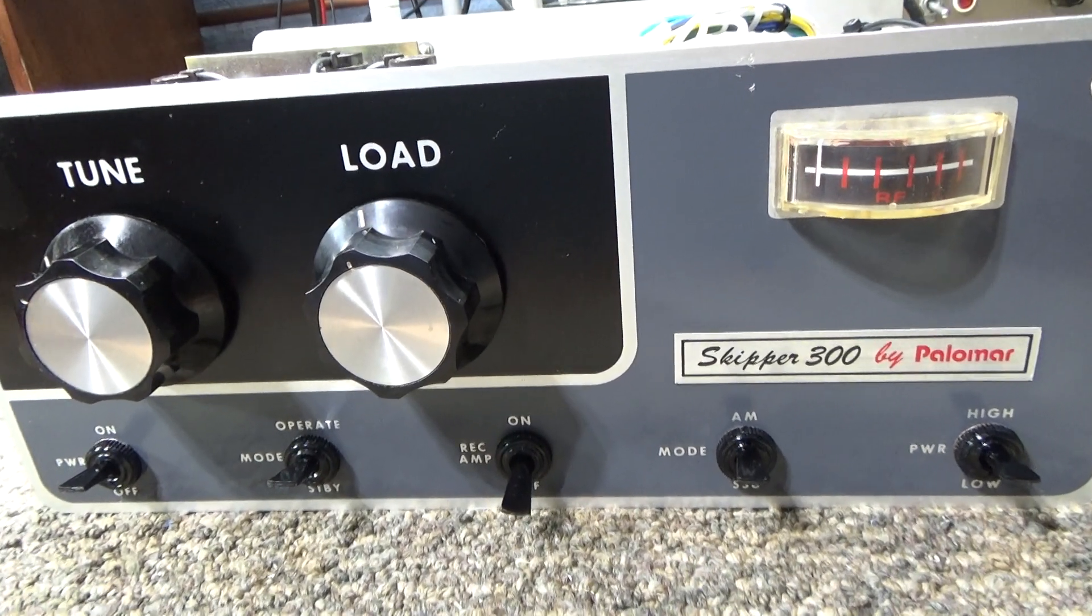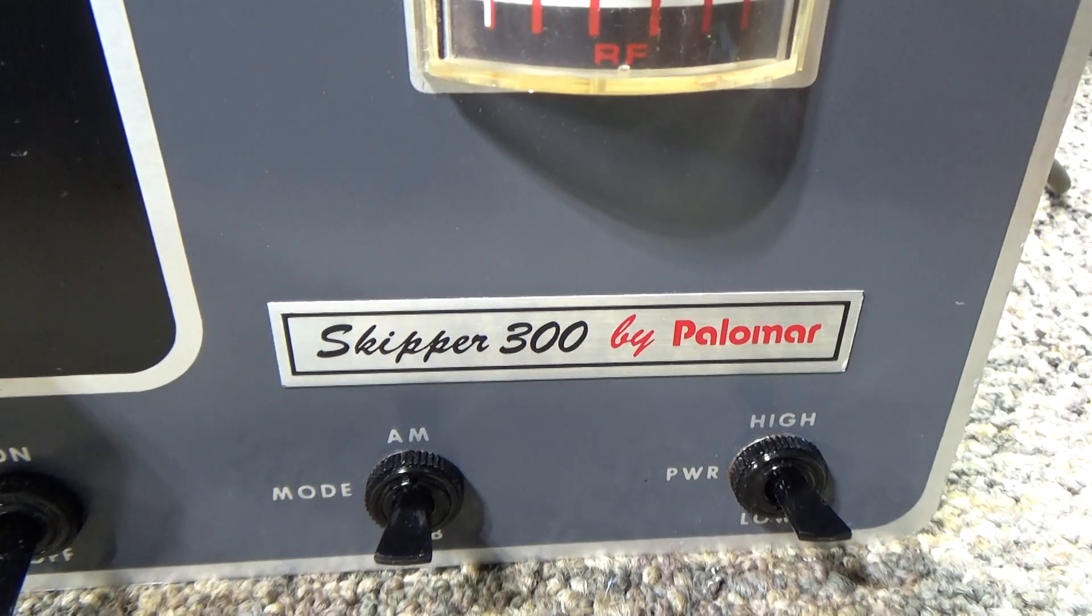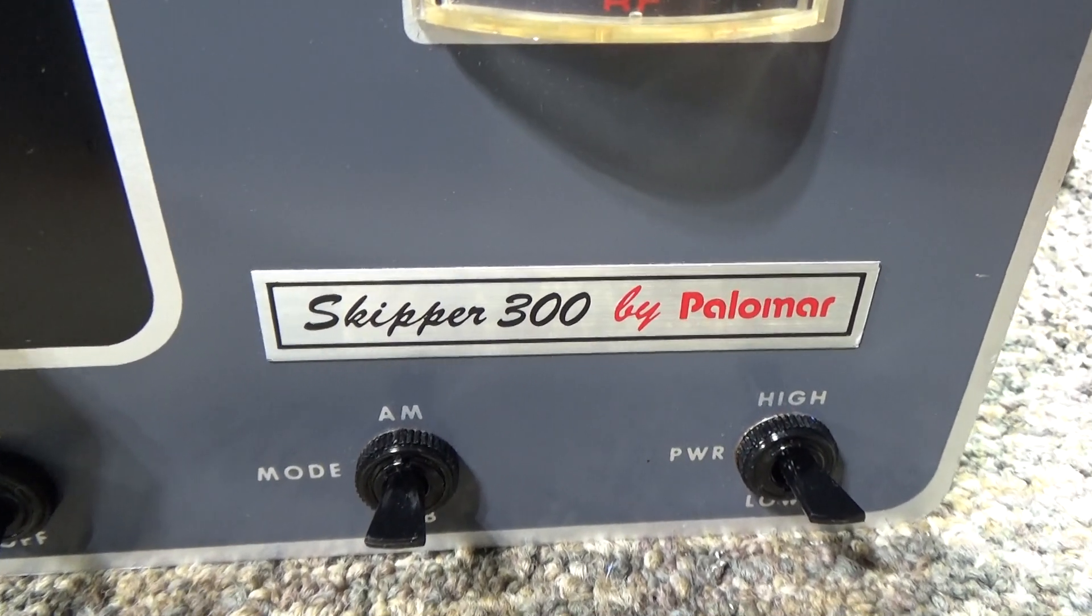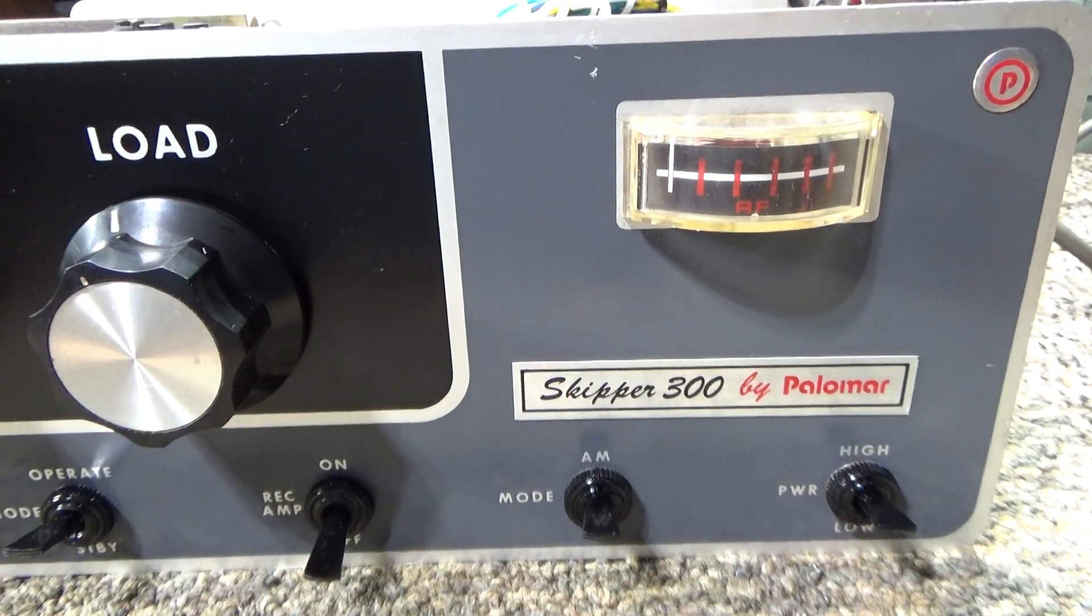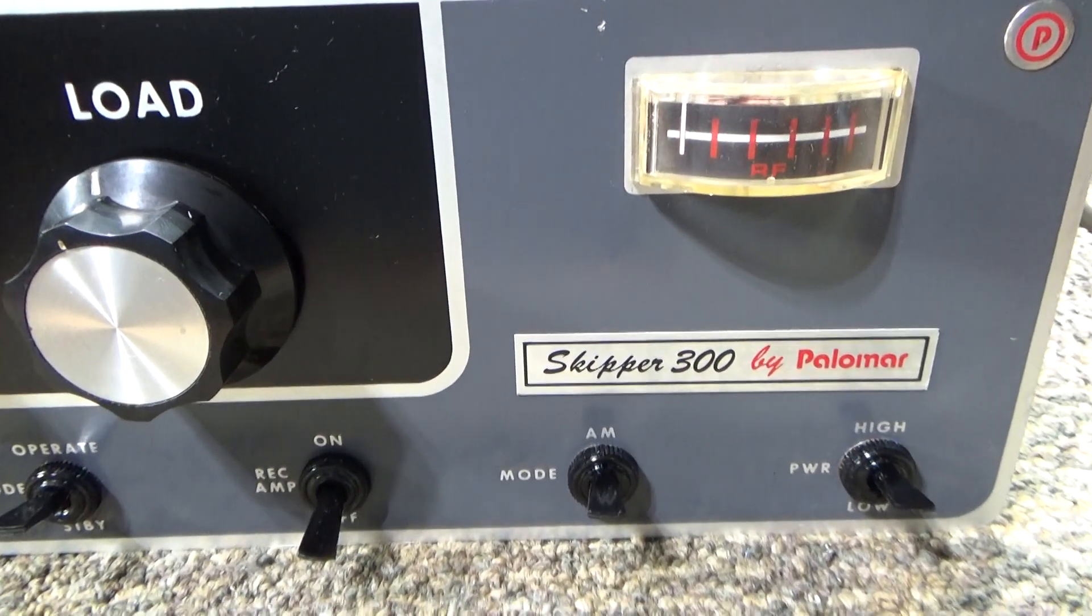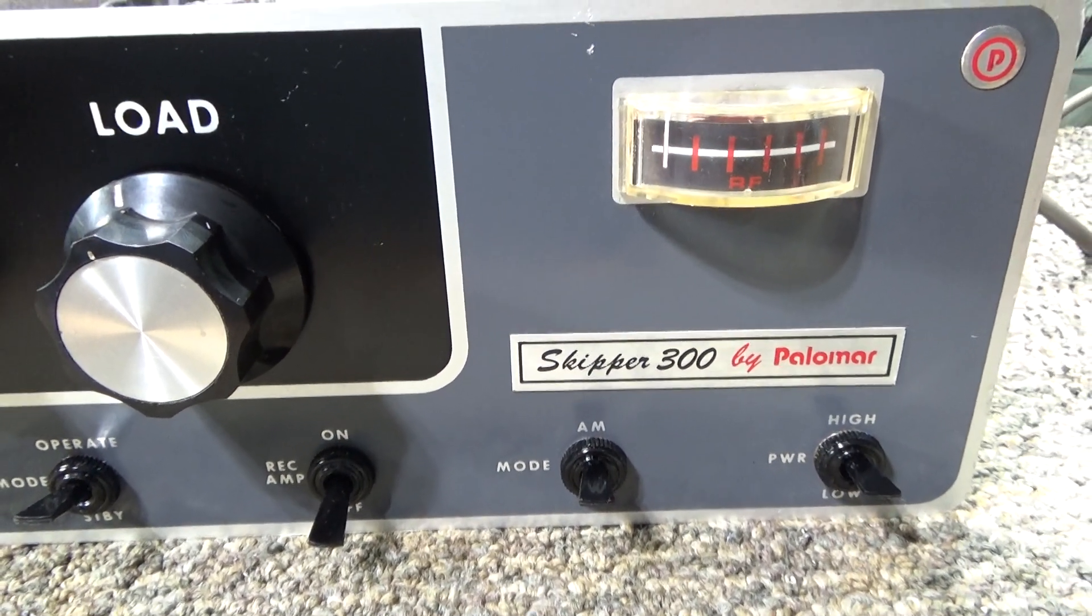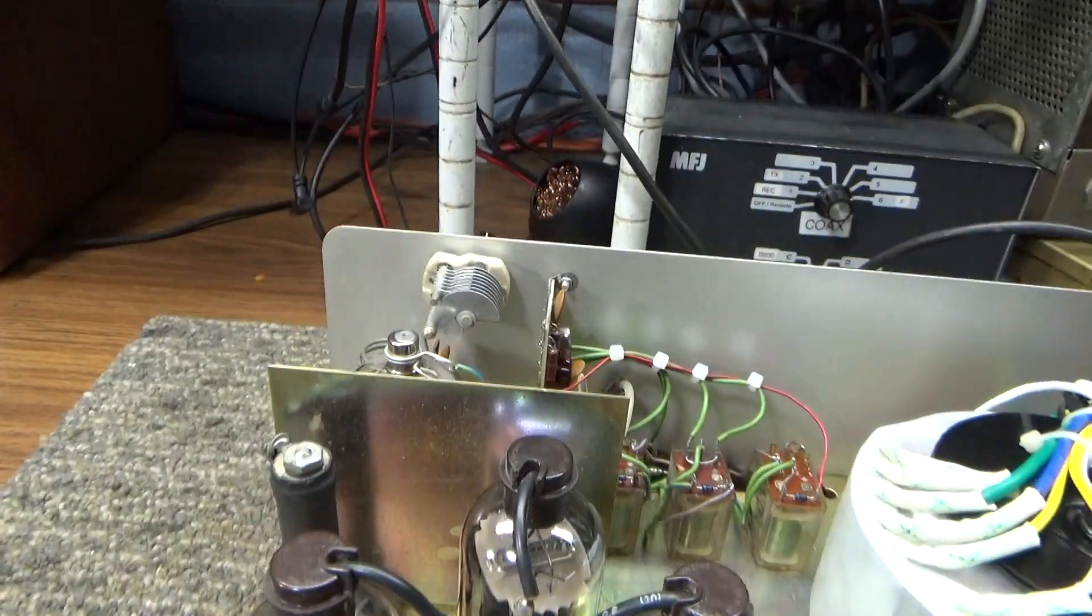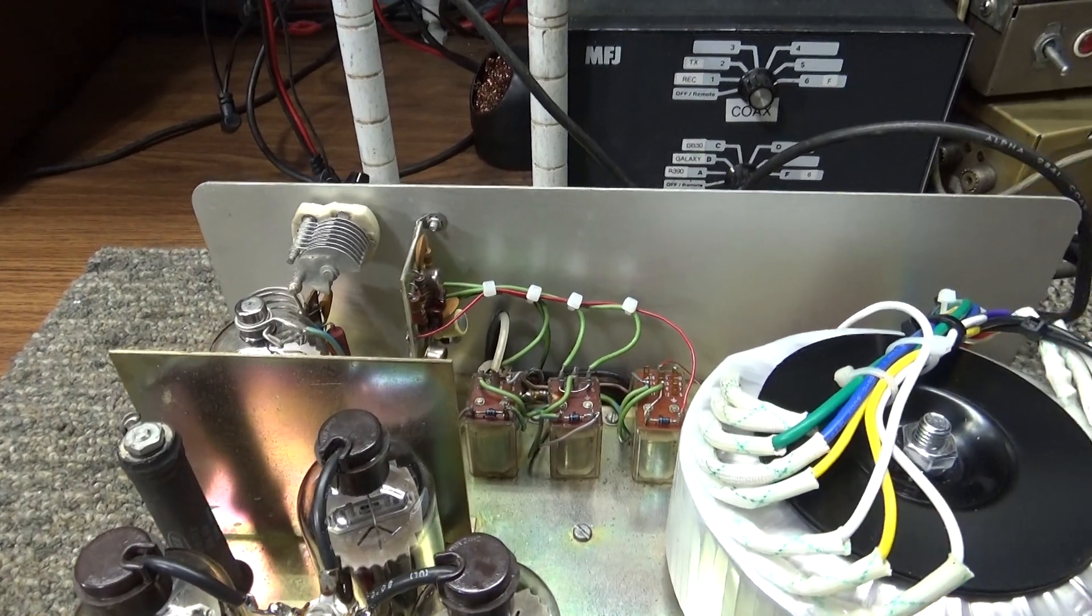Another Palomar, at least this time it's a Palomar Skipper 300, not a 300a. This is the 300a's little brother. The Palomar 300a has two driving four, and this little skipper here has one driving three, so it's a smaller amp.